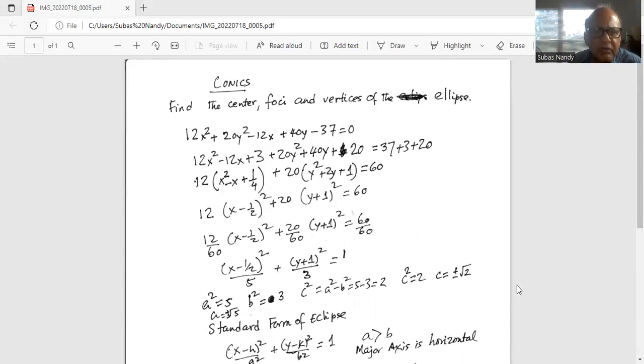And I removed the 37 to the right hand side is equal to 37. And since I added 3 and 20 extra in the left hand side, I also add those two terms, 3 and 20 on the right hand side.